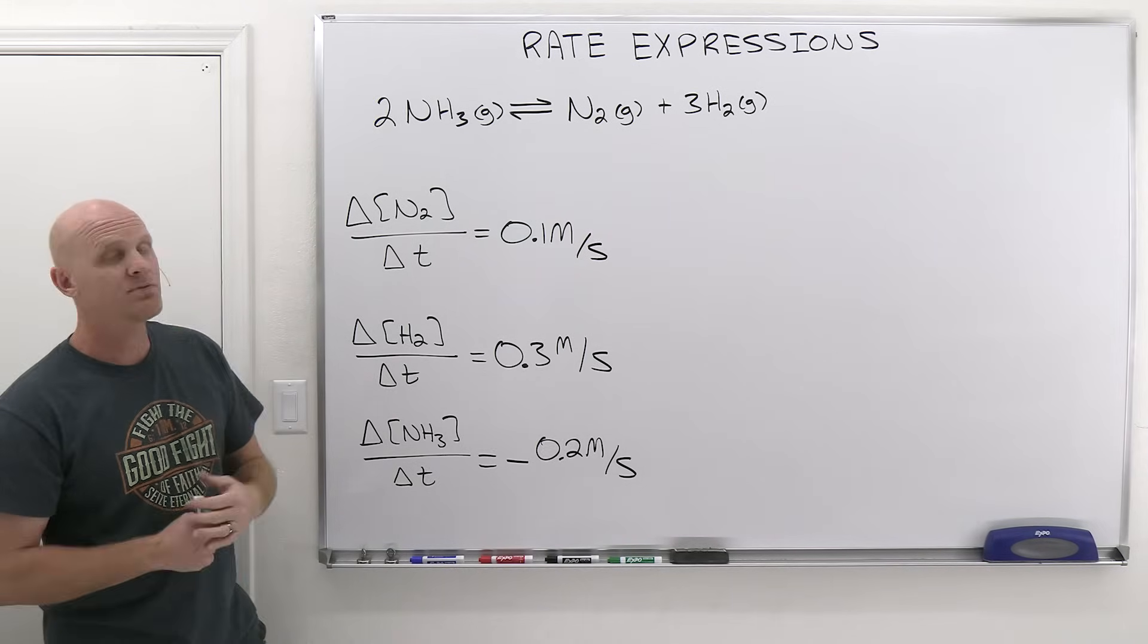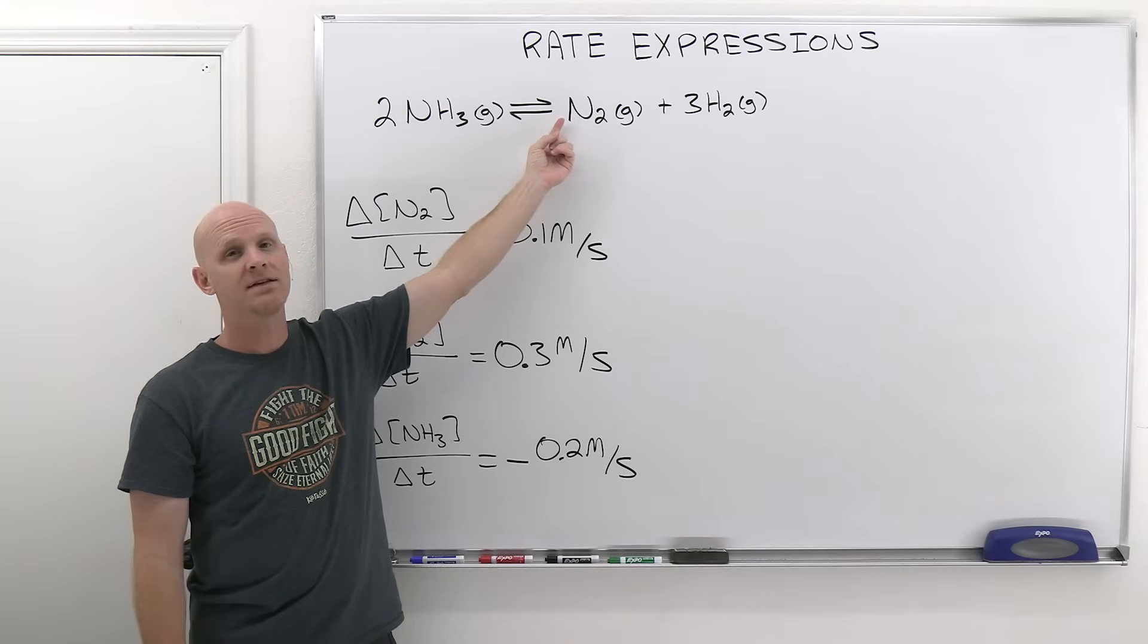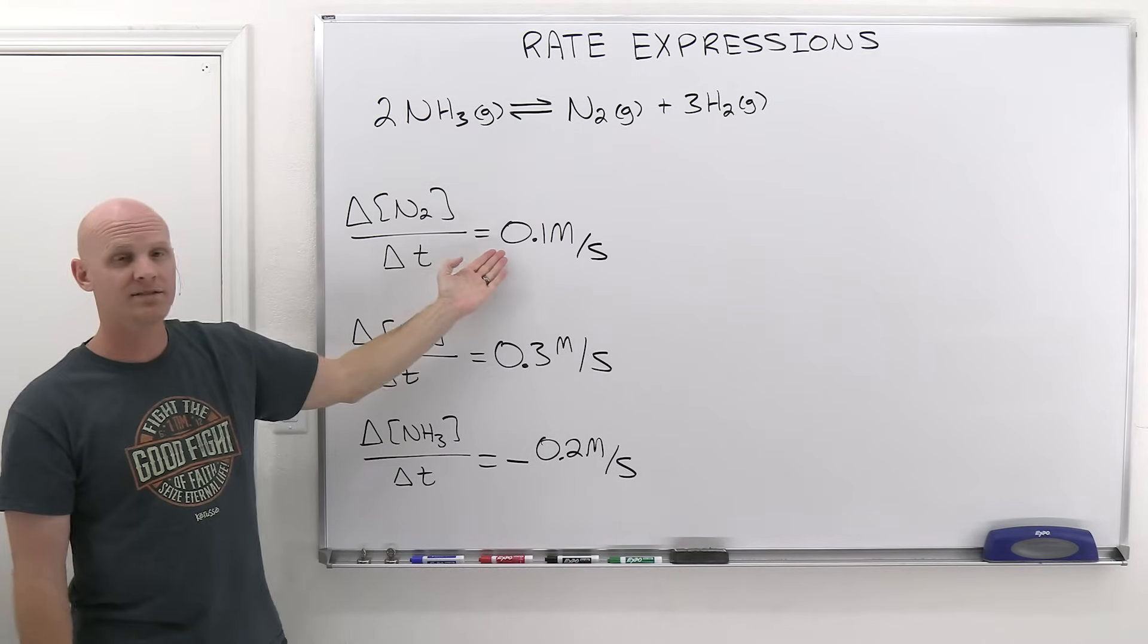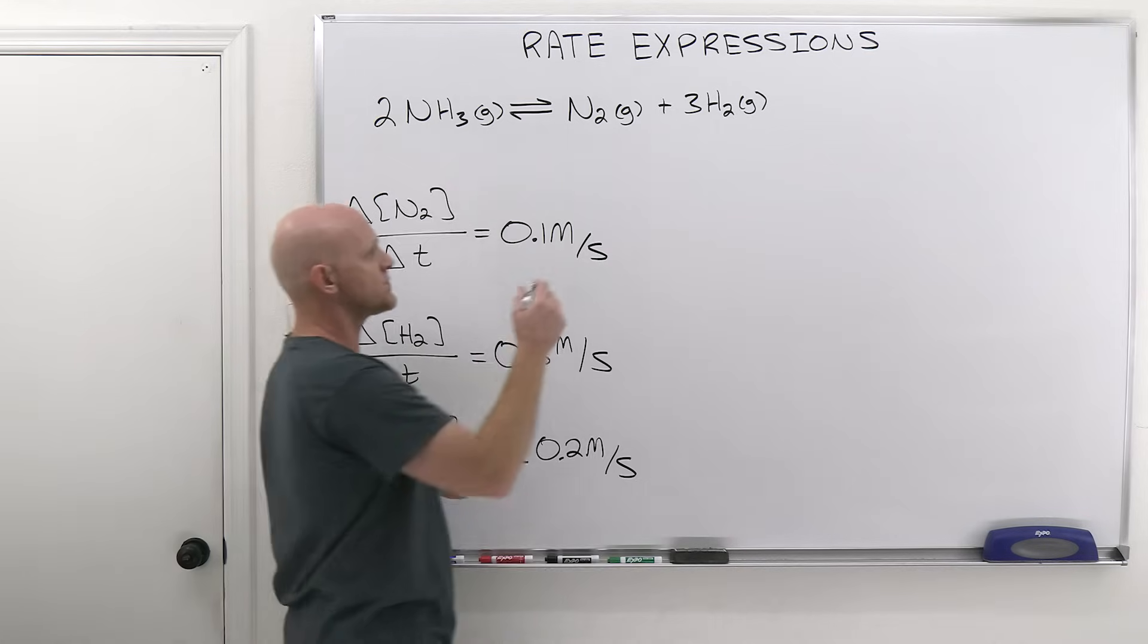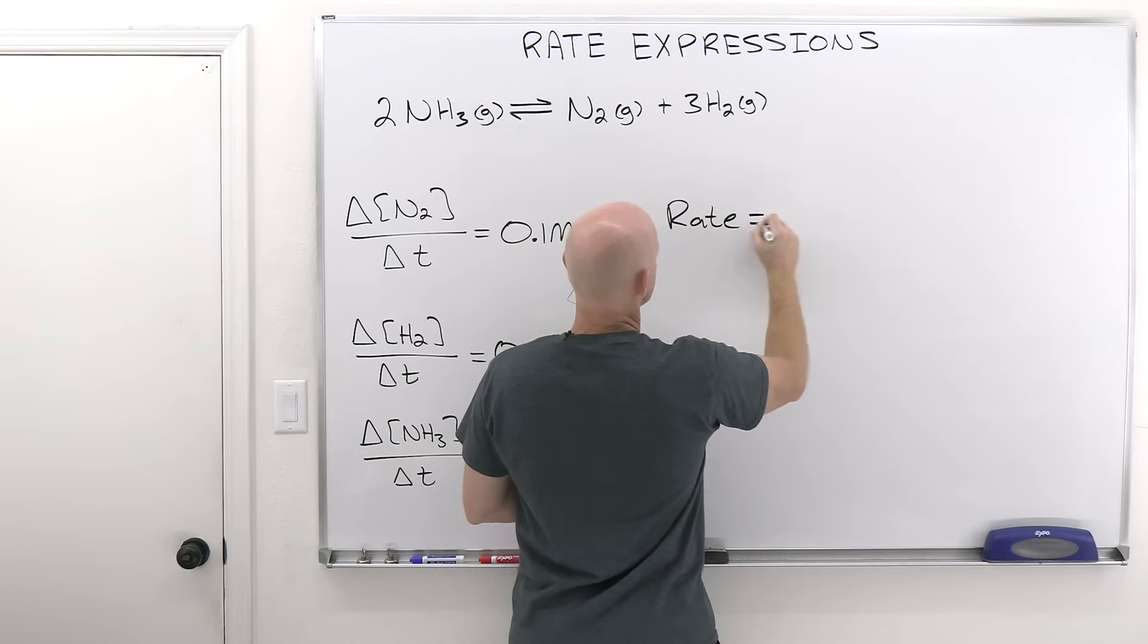It turns out that rates of reaction are always positive. The rate of reaction's essentially going to be whatever the rate for anything on the product side that has a coefficient of one. That's why it ends up matching what it is for the case of N2. These rates of reaction, you actually get these from rate expressions.